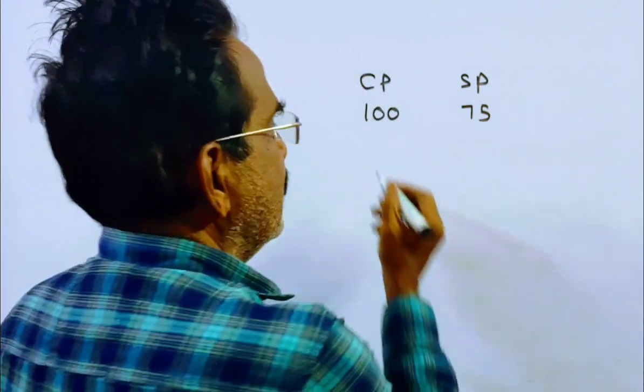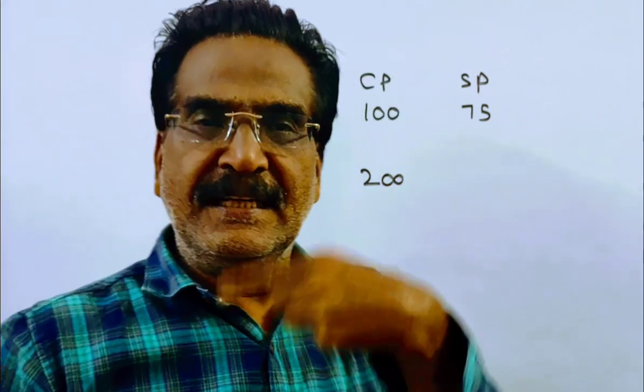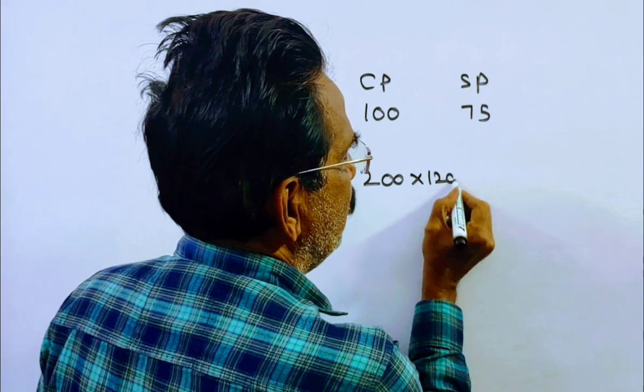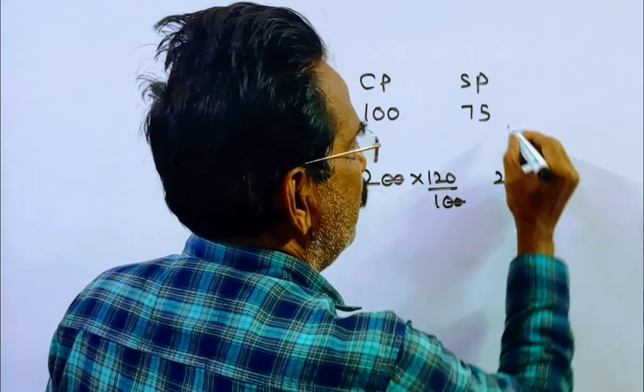Friends, now the cost price is doubled. Cost price is doubled and it is sold at a profit of 20%. Then the selling price becomes 200 into 125 by 100. That is 240.